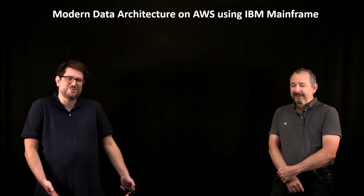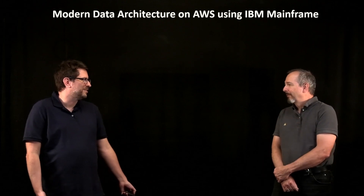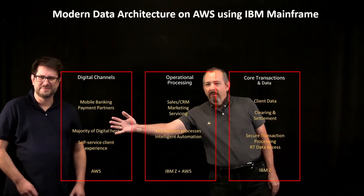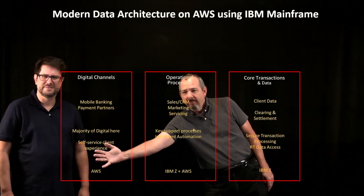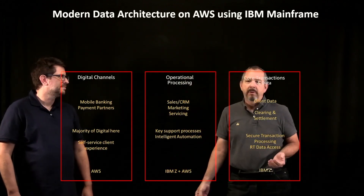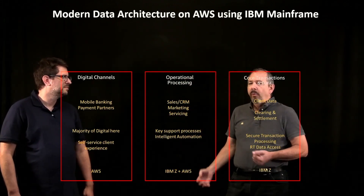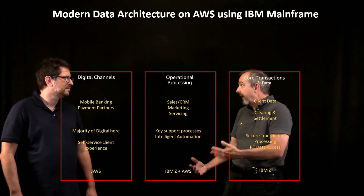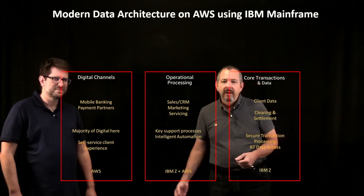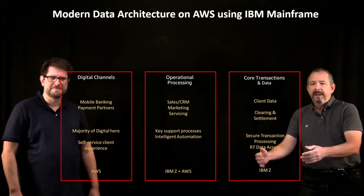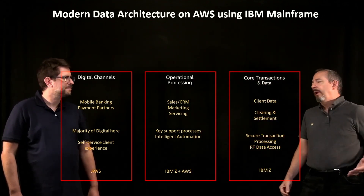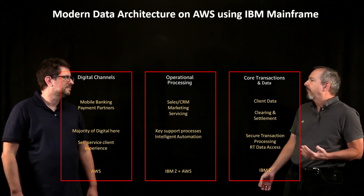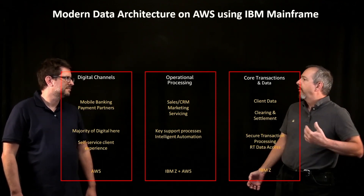How can they use that data on AWS to their benefit? On this side, we're going to talk about all the things that are modern mobile banking, payment partners, all the web-facing, web-fronting businesses that are done — and a lot of those are financial in nature these days. On this side, you've got your back-end: all your client data, clearing, settlement, transaction processing. And these are things that are on the mainframe, going to stay on the mainframe. That's where they're best suited.